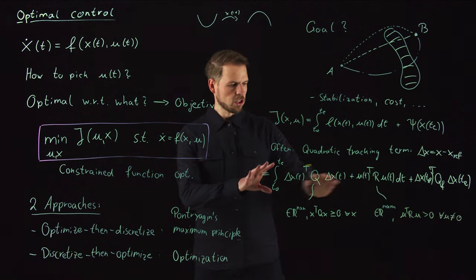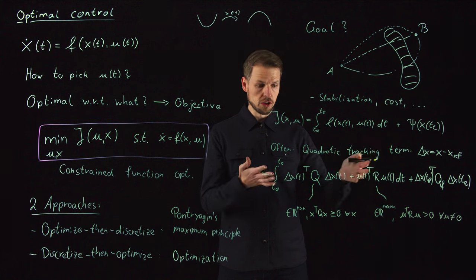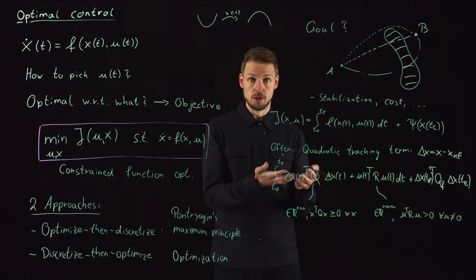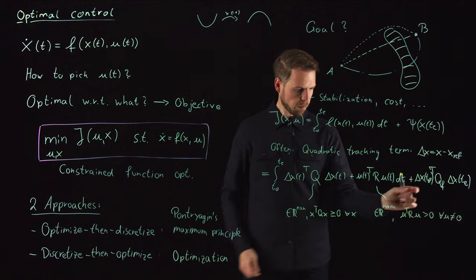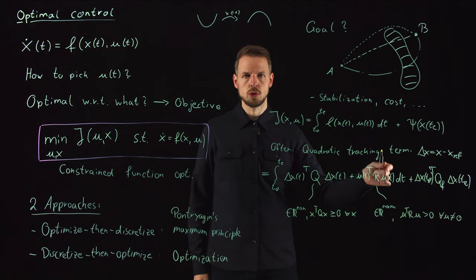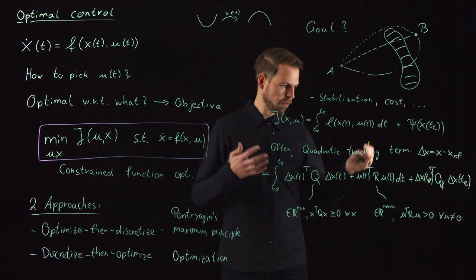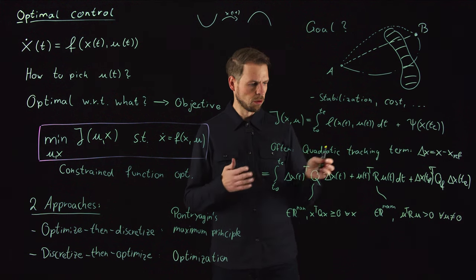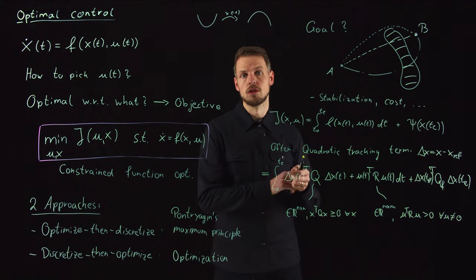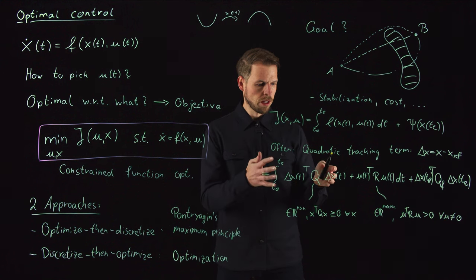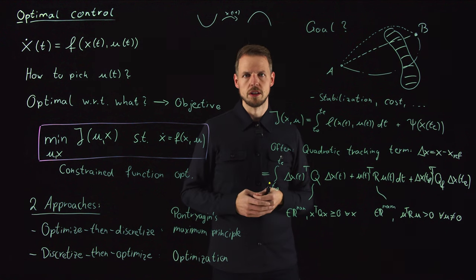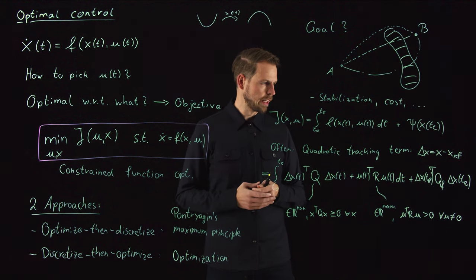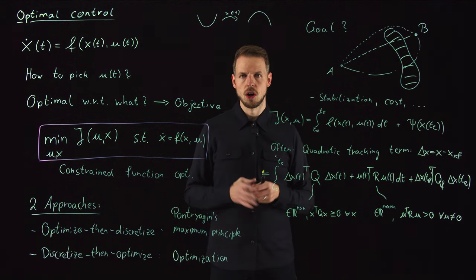For the R matrix, which is in m by m (control dimension), we ask it to be positive definite, which means u transpose R u is greater than zero for all u that are not zero. This ensures the function is non-negative, so it's bounded from below. The matrix conditions, particularly for the u term, ensure it's a function we can find a minimum of. In linear control this gives us a quadratic cost function, and with linear dynamics you can solve this in very elegant closed form fashion.